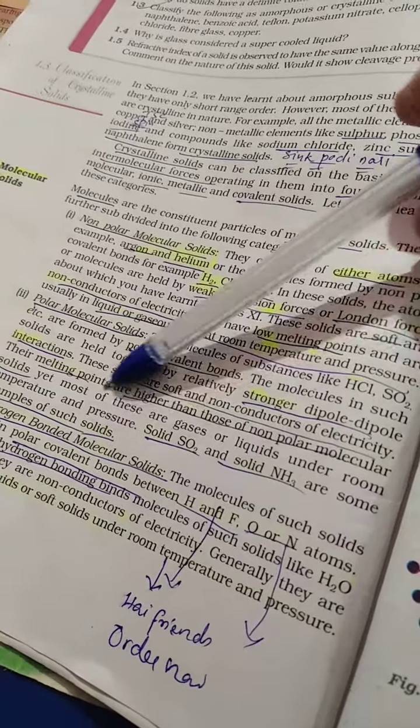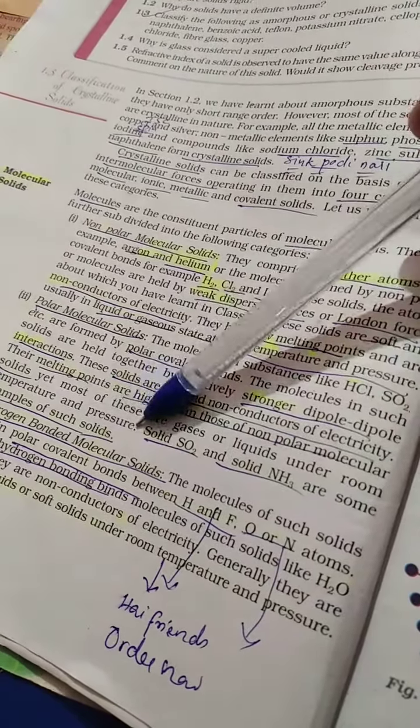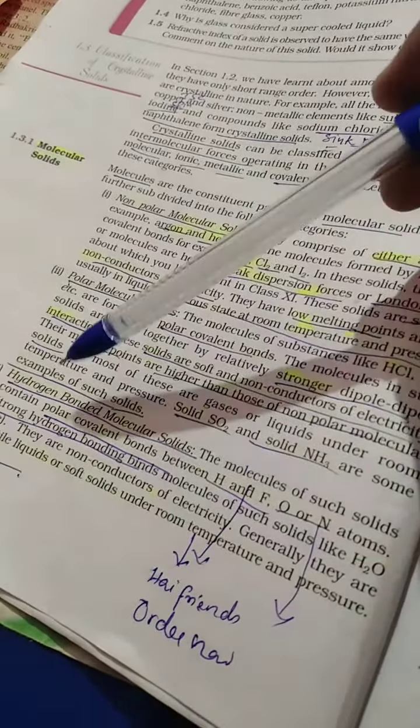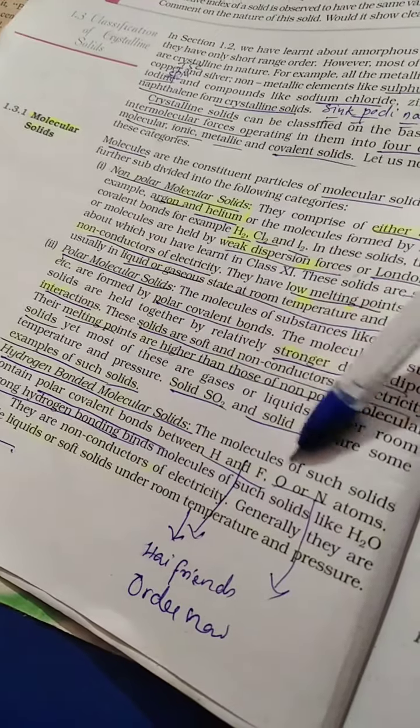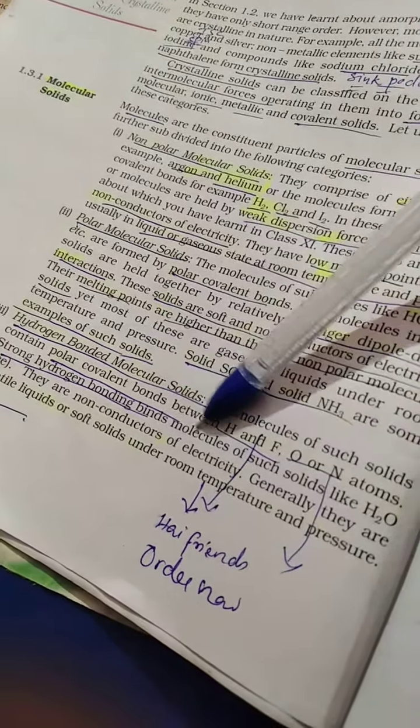The first thing is the noble gases are at room temperature and pressure. We have solid sulfur dioxide and solid ammonia. Hydrogen bonding is very important in these substances.